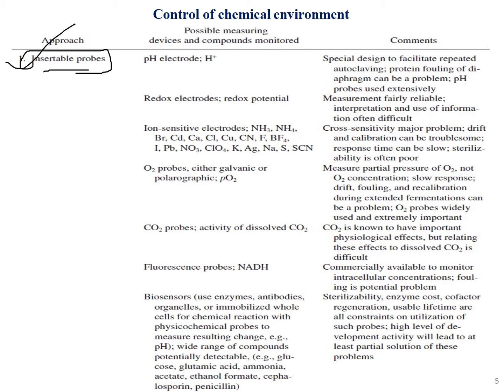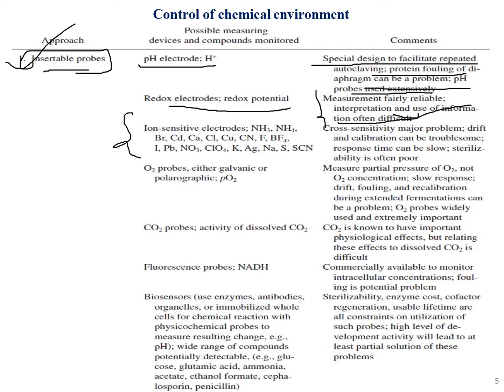Insertable probes possess a pH electrode with a special design to facilitate repeated autoclaving, though protein fouling of the diaphragm can cause problems. They also include redox electrodes — redox potential measurement is fairly reliable, though interpretation of the information is often difficult. Ion-sensitive electrodes can measure ions such as NH3, NH4, and many others.